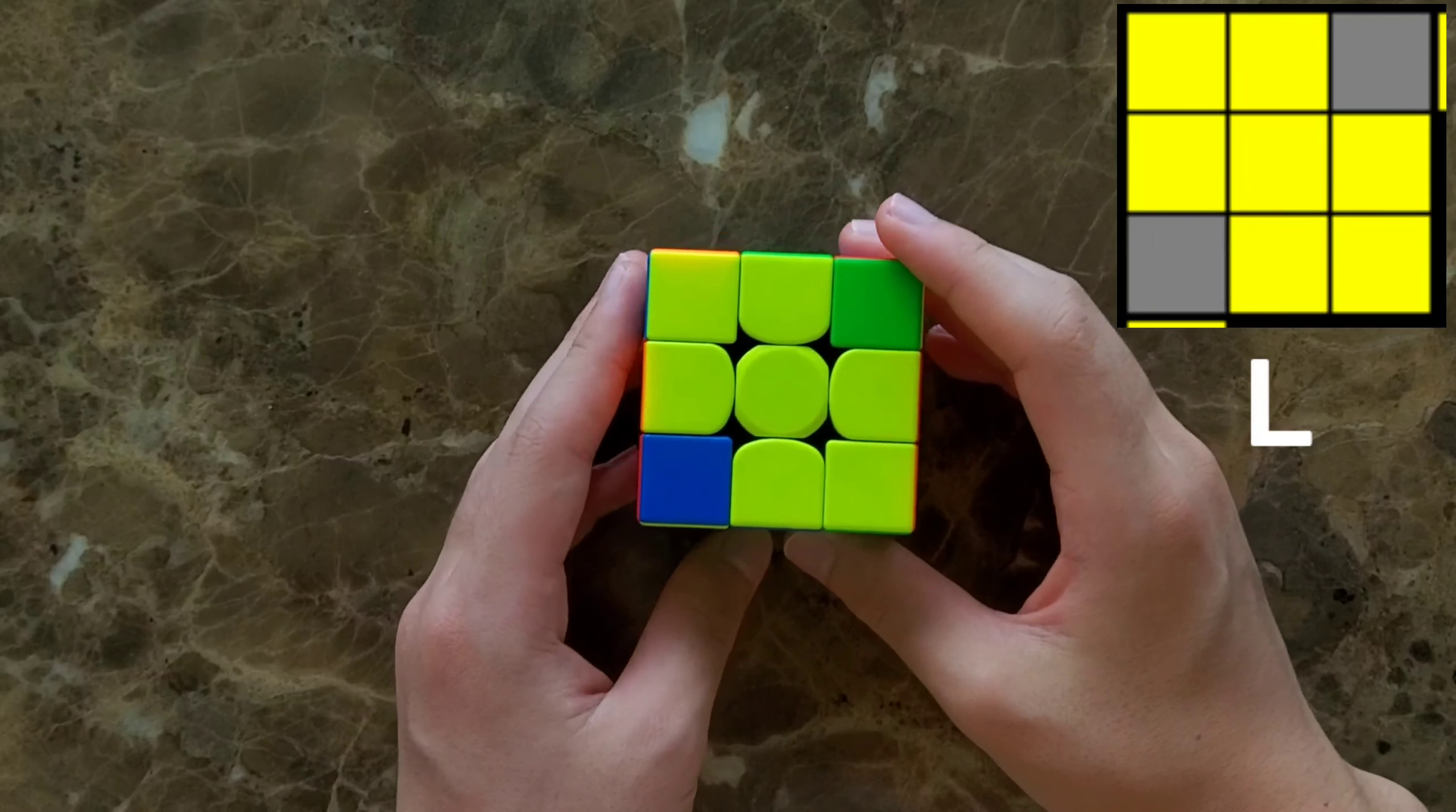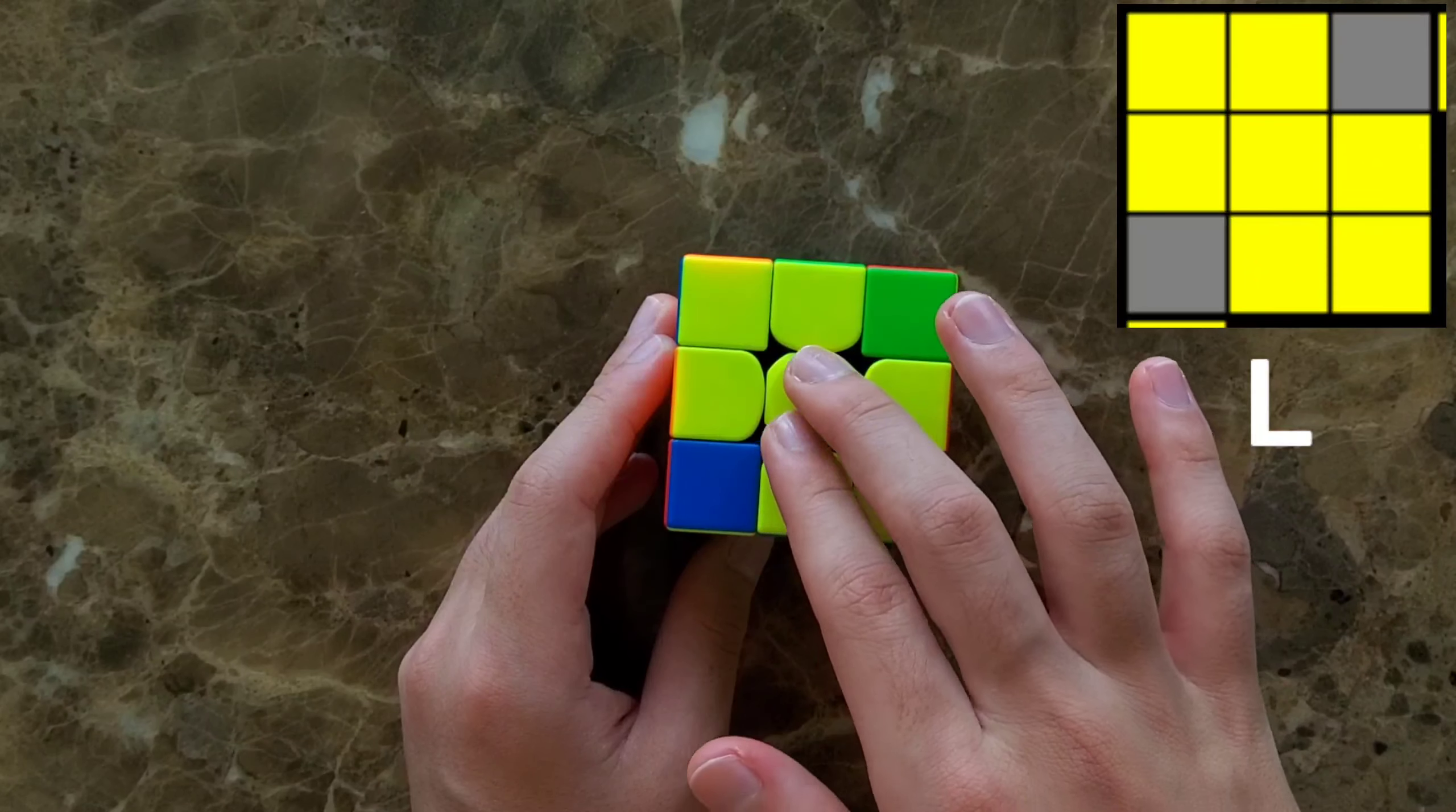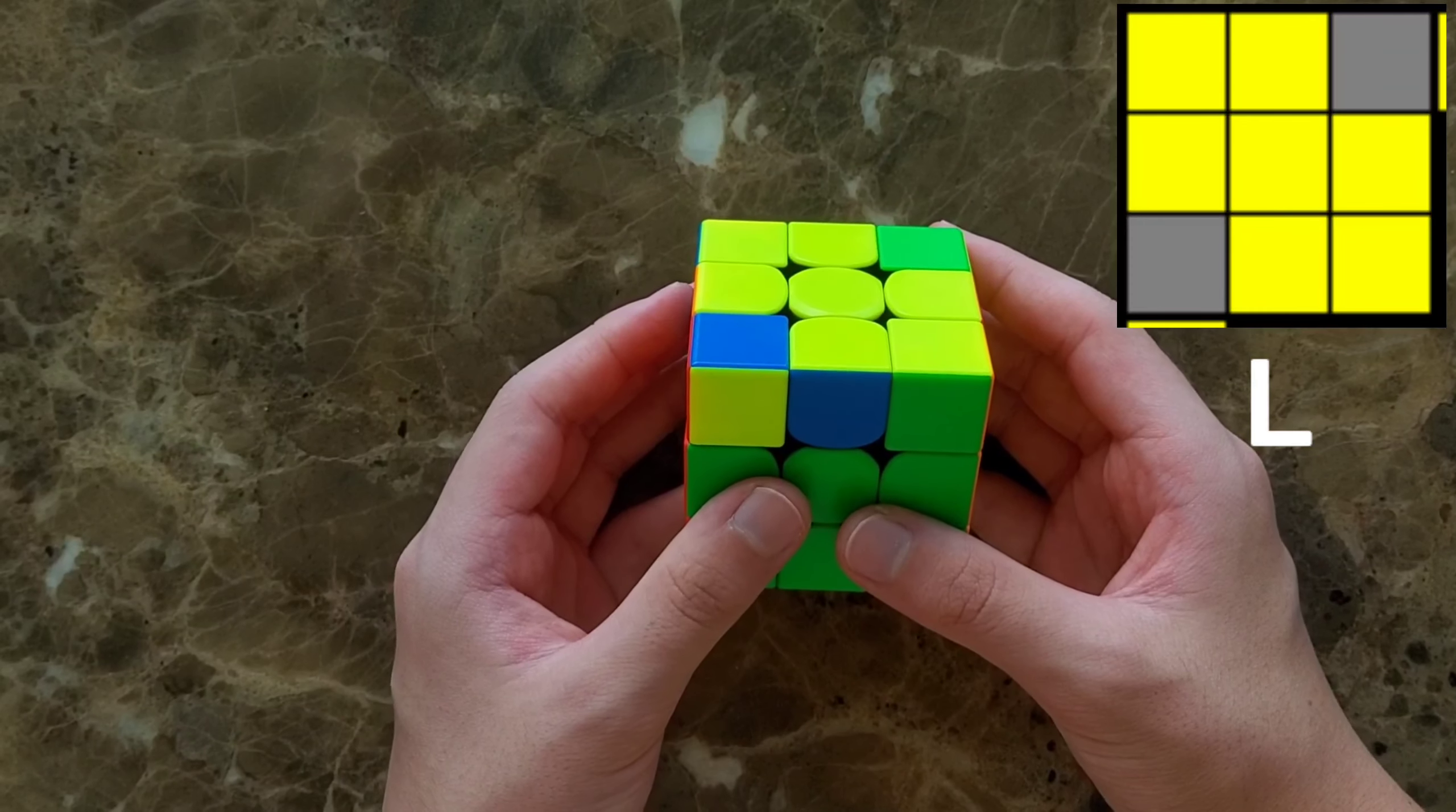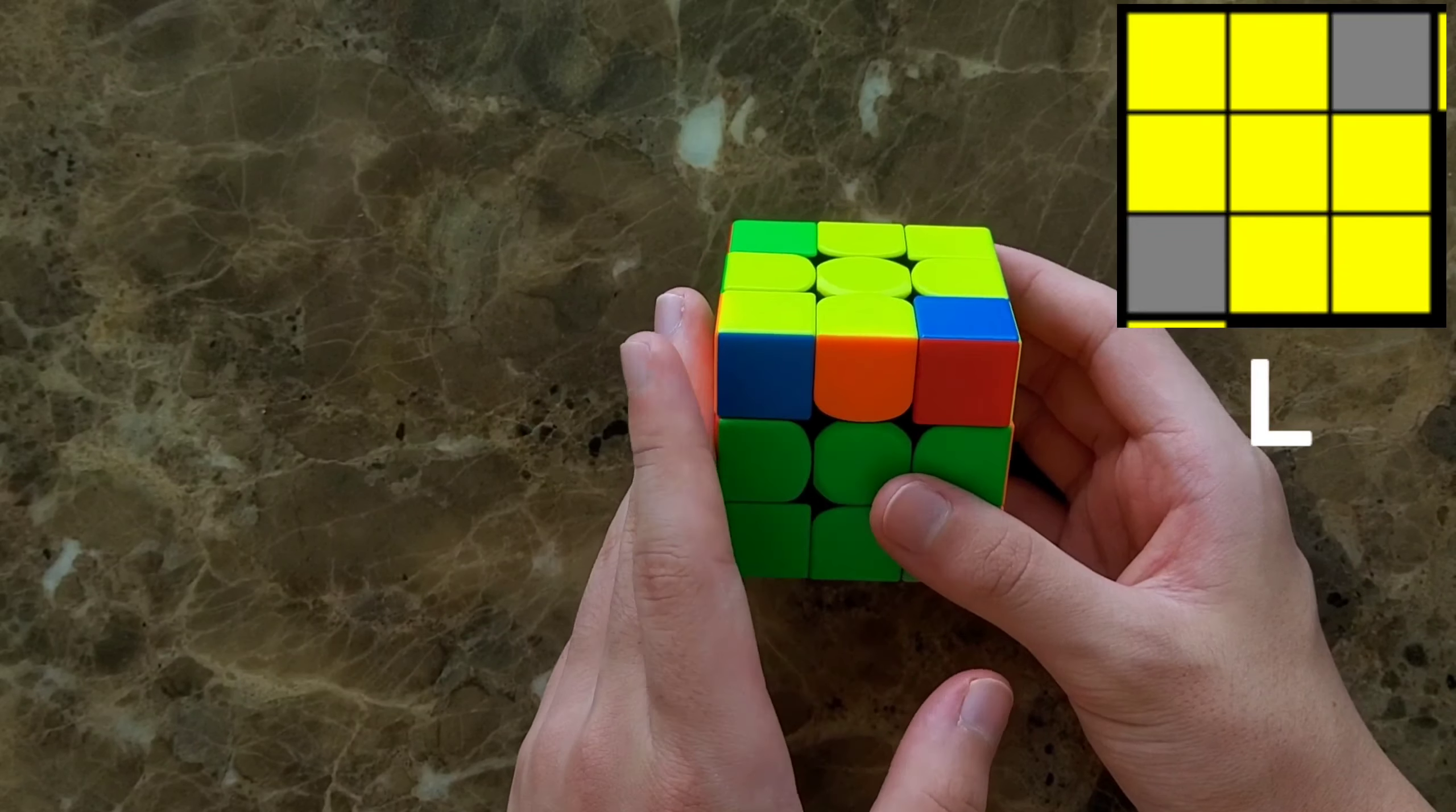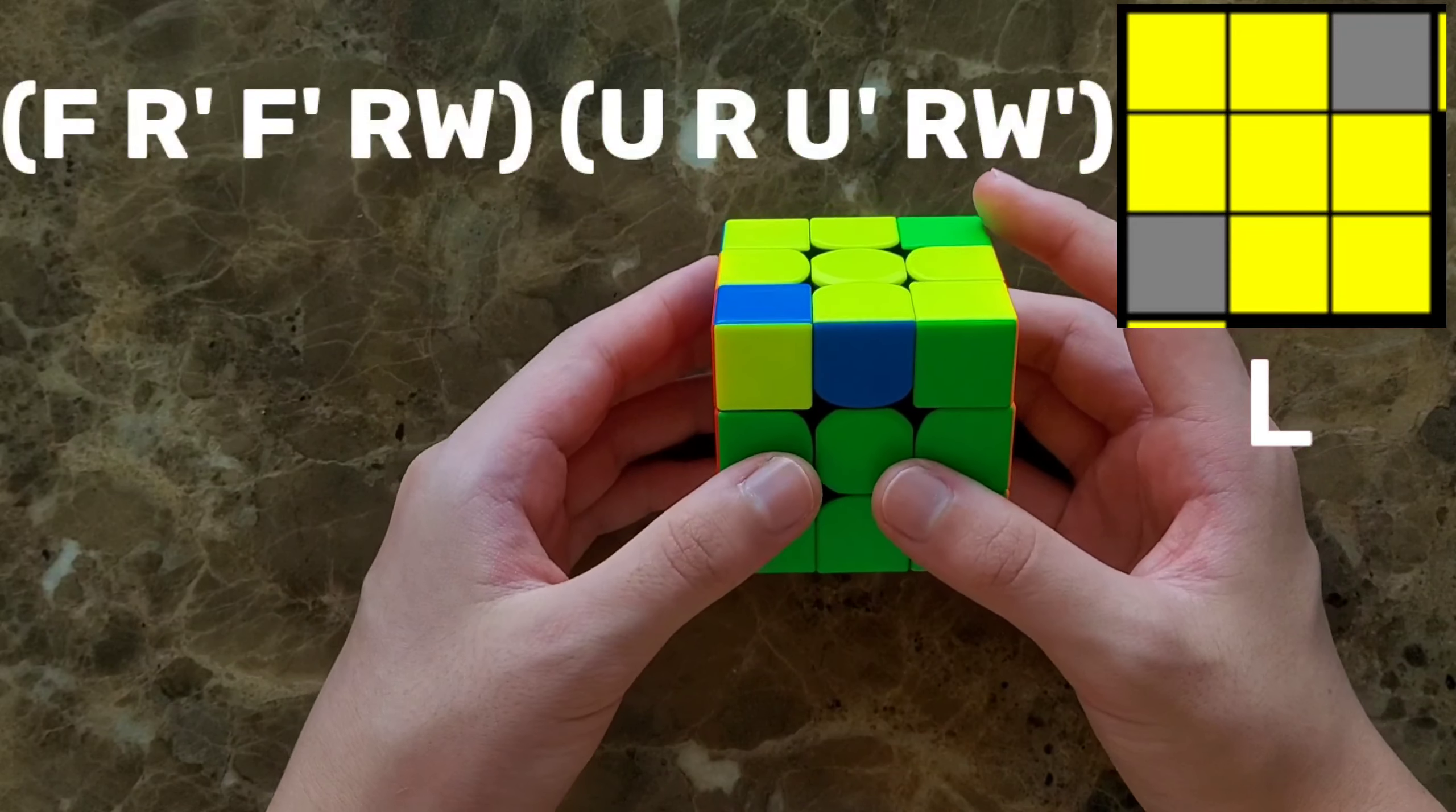In this case, the shape looks like a shape I don't know. It just looks like that. The yellow piece is on the left, so this is on the left. Use this algorithm here.